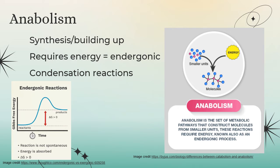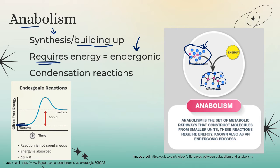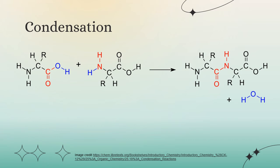The opposite of catabolism is anabolism — taking those tiny pieces from digestion and building them into the bigger polymer molecules we want in our bodies. This is the synthesis of bigger molecules, building up polymers. It requires energy; we call these reactions endergonic. The reactants start with a little energy, we add energy to get the molecules to stick together, and the product ends up with more energy stored in its chemical bonds than the original molecules had. The chemical reaction that makes this happen is known as a condensation reaction.